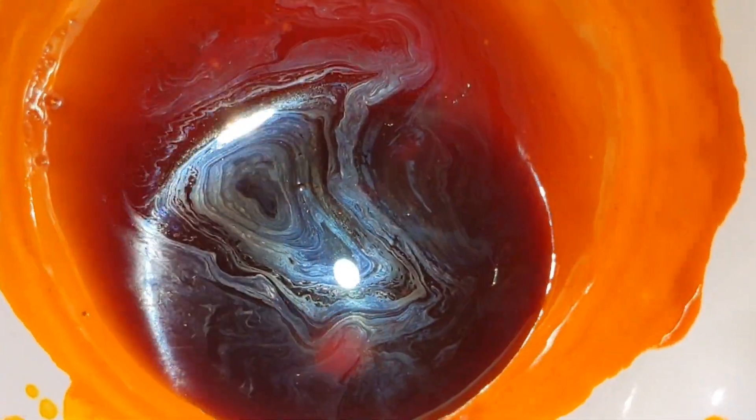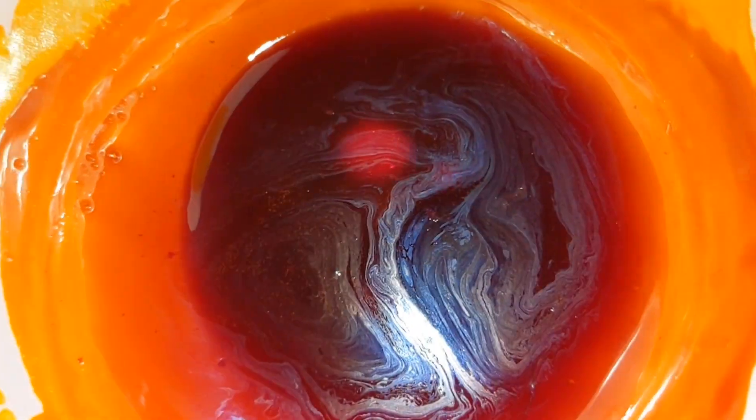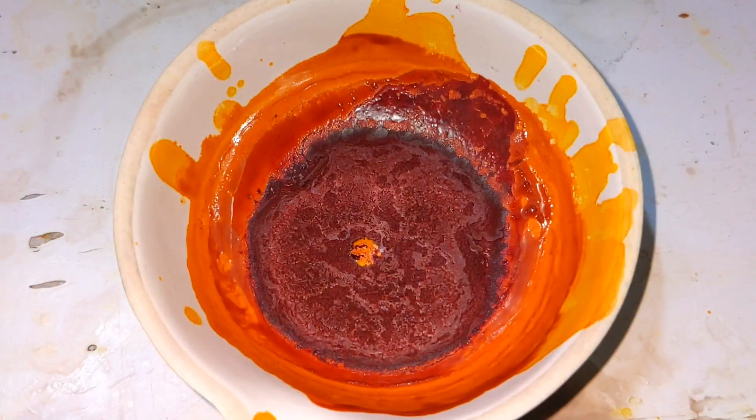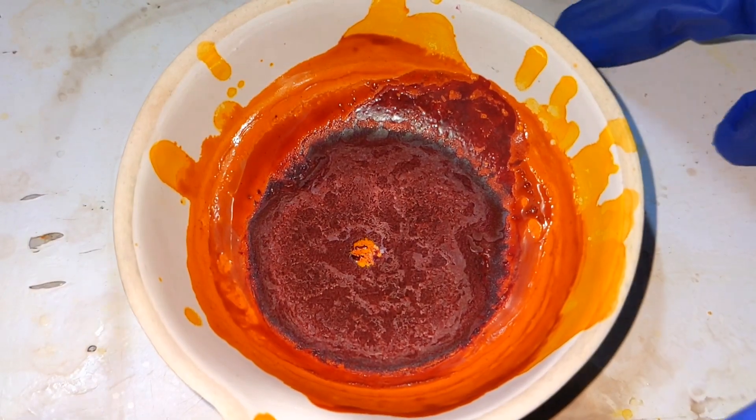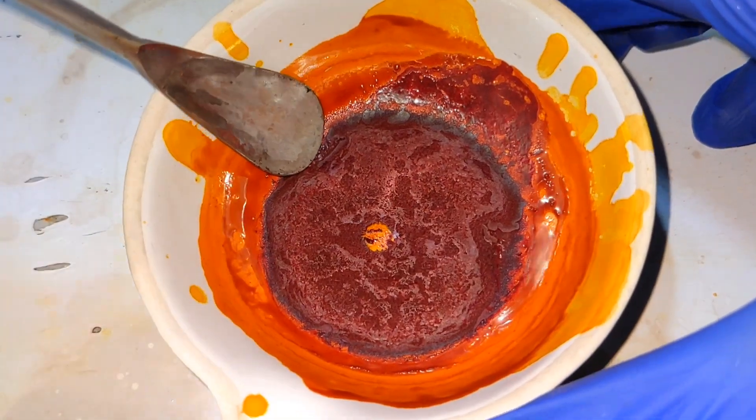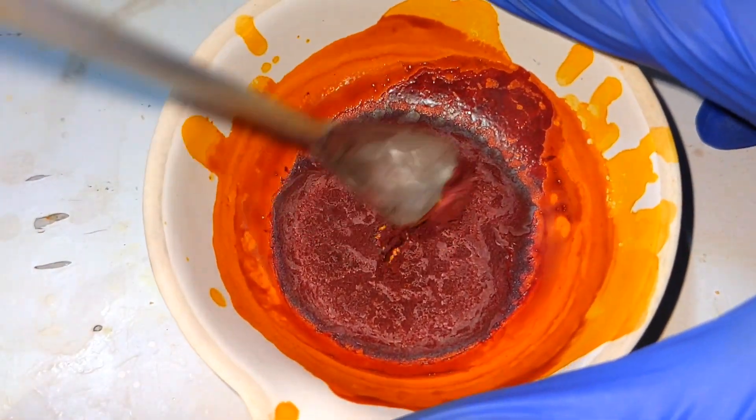The distillation contents were then transferred to an evaporating dish. It was already a dark red colored gooey liquid. It was then placed overnight. The rest of the water and ether evaporated. The next day we were left with solid fluorescein.